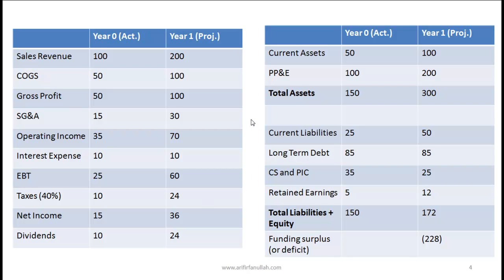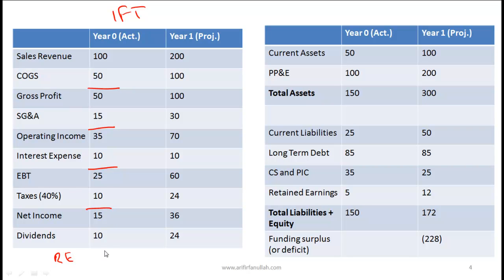Let's look at a simple example for company IFT. In year zero, sales revenue is $100 million, cost of goods sold is $50 million, giving gross profit of $50 million. SG&A expenses are $15 million, so operating income is $35 million. Interest expense is $10 million, making earnings before tax $25 million. At a 40% tax rate, taxes are $10 million, leaving net income of $15 million. With $10 million paid as dividends, retained earnings are $5 million.